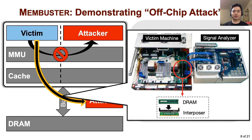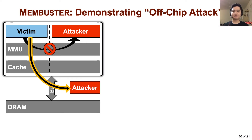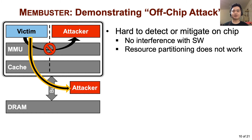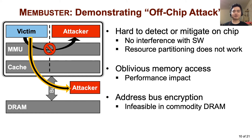We found that one can easily obtain the devices needed for the attack, as they are widely used by companies for debugging purposes. We highlight that none of the existing side-channel defenses nor TEEs can prevent this attack, because Membuster is fundamentally different from previous side-channel attacks performed inside a chip. The attacker's observation requires no detectable interference such as interrupts or page faults, making it difficult to detect even the presence of the attacker. Partitioning on-chip resources does not prevent the attack since the attacker directly observes memory transactions outside the chip. Preventing the attack requires either making memory access entirely oblivious — which is very expensive — or encrypting the address bus, which is infeasible in commodity DRAMs.